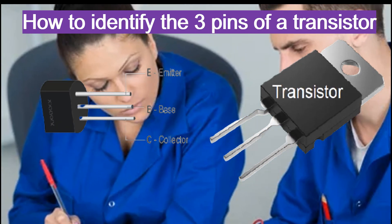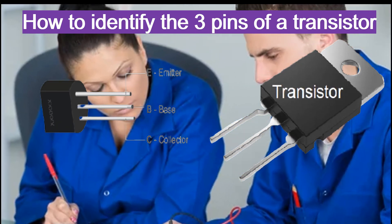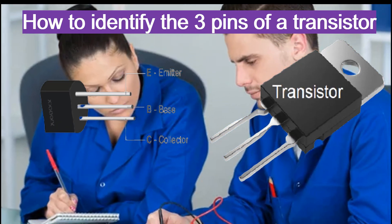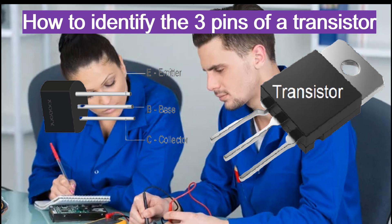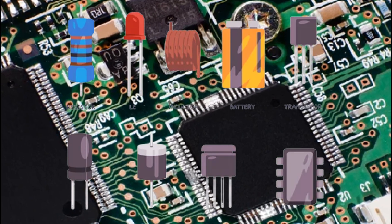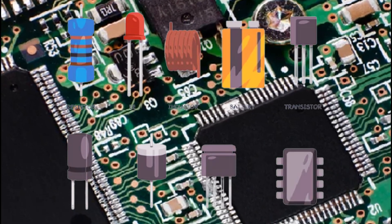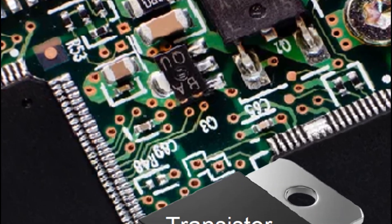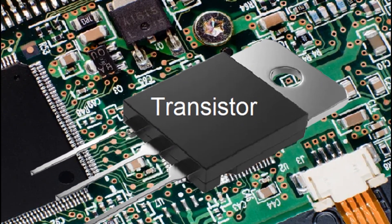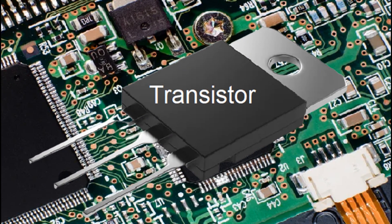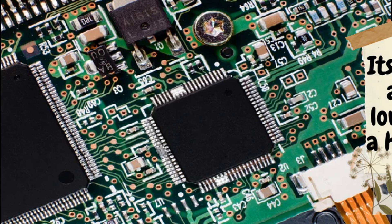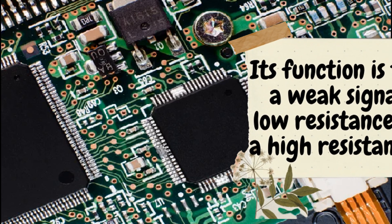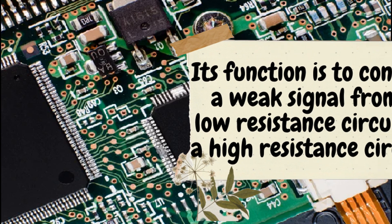How to identify the three pins of a transistor correctly. An electric circuit is made up of a combination of different electrical components. One of these electrical components is the transistor. A transistor is an essential part of an electric circuit. Its function is to convert a weak signal from a low resistance circuit to a high resistance circuit.